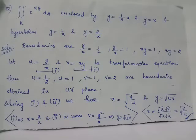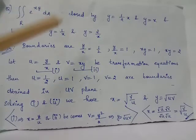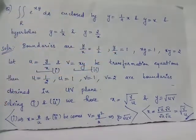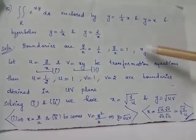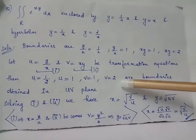When we use the transformation equations u = y/x and v = xy, the boundaries in the uv-plane are given by u = 1/2, u = 1, v = 1, and v = 2. We simply replaced y/x with u and xy with v in the given boundaries to obtain the new boundaries in the uv-plane.